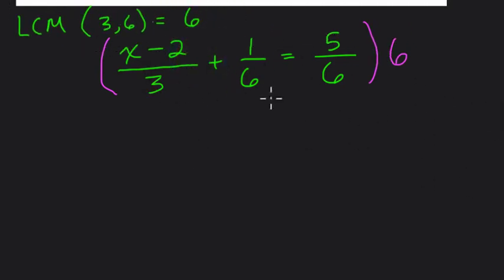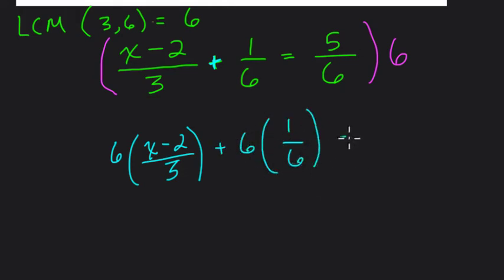So 6 times x minus 2 over 3, that'll be our first product. Then we have to multiply every term by 6. So here, addition separates the left side of the equation to two terms. So we can also multiply 1/6 by 6 to keep the equation balanced. And on the right-hand side, multiply 6 by 5/6.